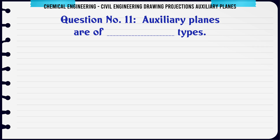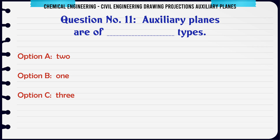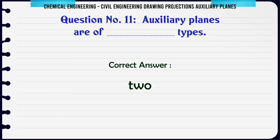Auxiliary planes are of how many types? A) 2, B) 1, C) 3, D) 6. The correct answer is 2.